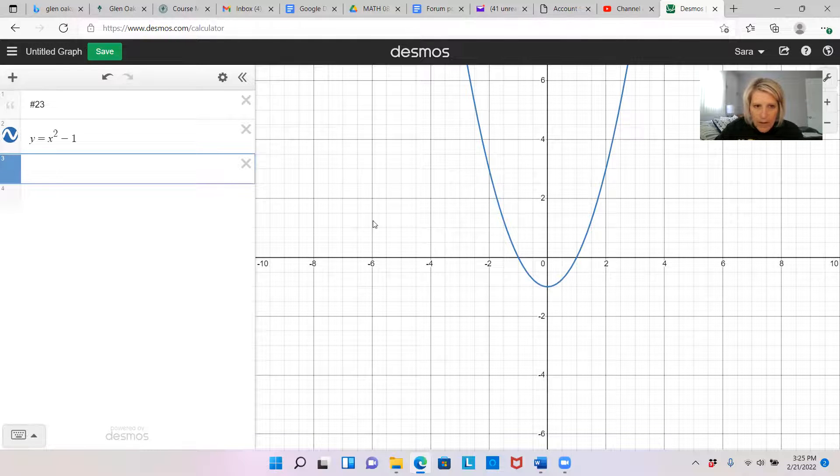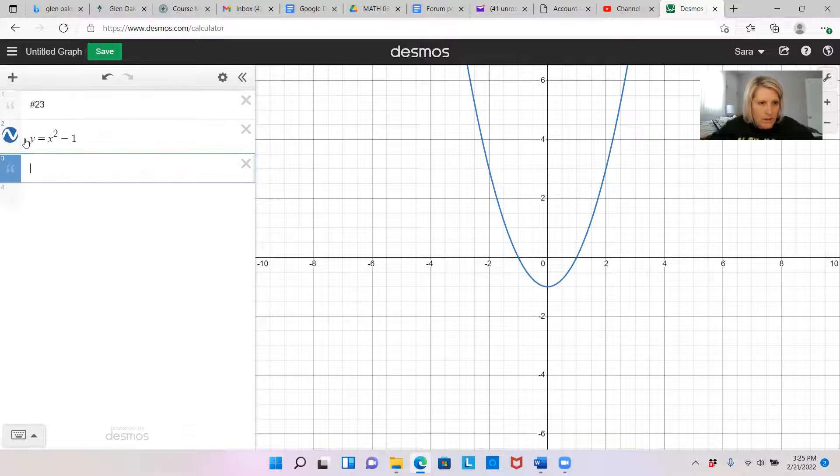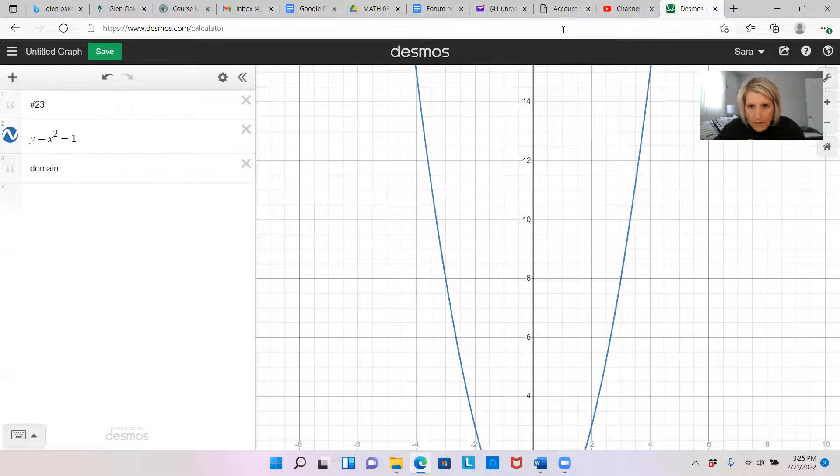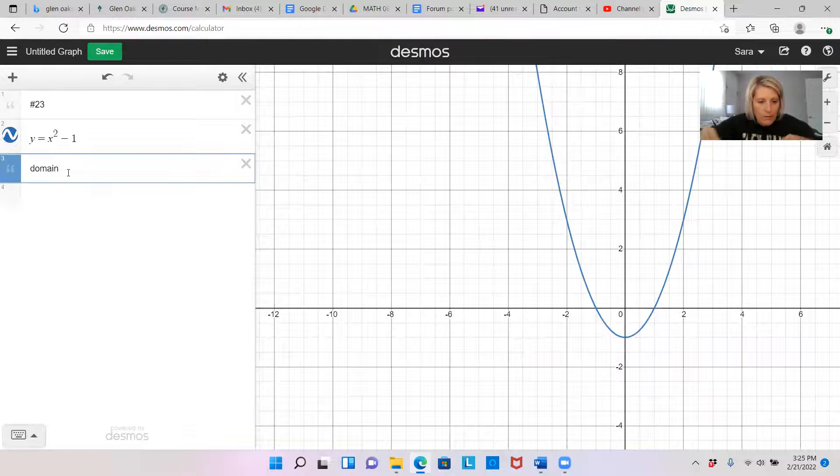And I want to see what is the, if my domain is going to be, let's just make the note here domain is going to be anything left and right. I'm not limited. I can just draw this. I'm not limited to anything left and right. So I can have all real numbers.